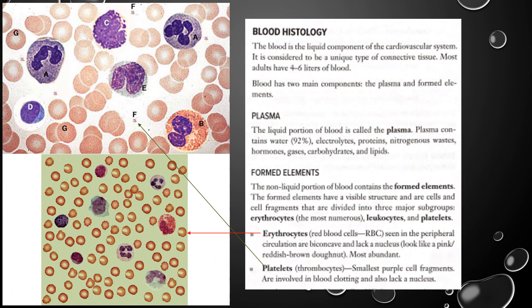We talked about the plasma already. With the formed elements, I'll start with two categories that we're not going to break down any further. First, erythrocytes, which are your red blood cells. They have a medium size compared to some other cells. They're going to have this white area in some of them that makes them look like a donut, but they're not donut-shaped at all. They're biconcaved — basically a shape where if you took two bowls and stuck the bases together, you'd have a thinner section in the middle and a thicker outer section.